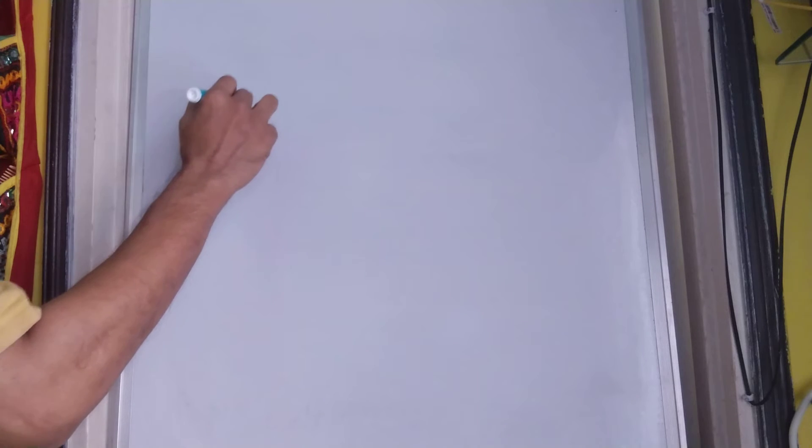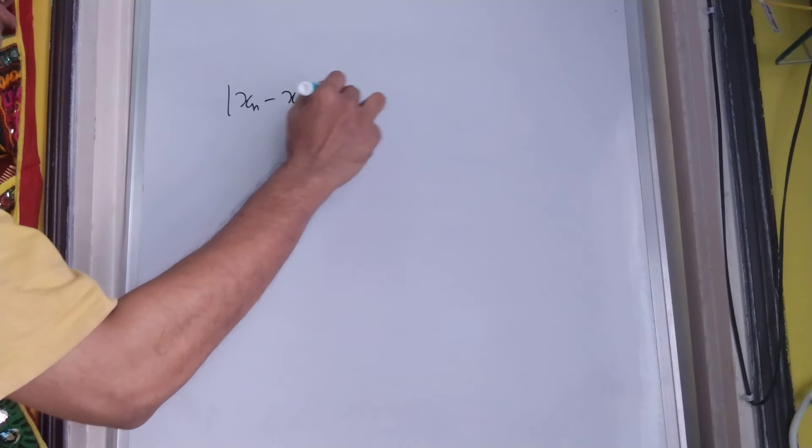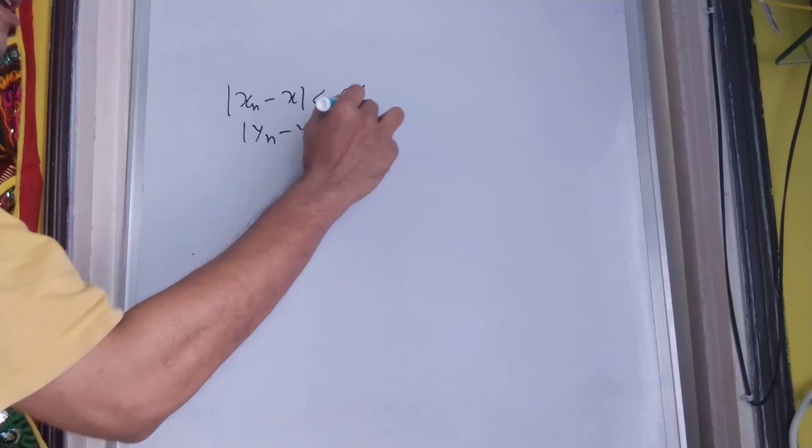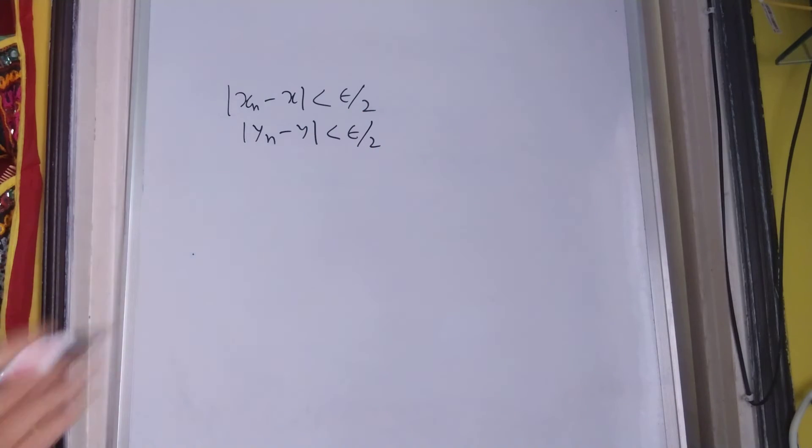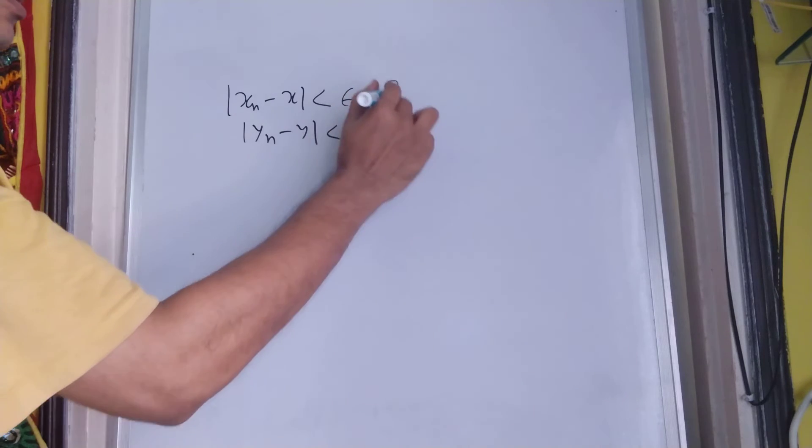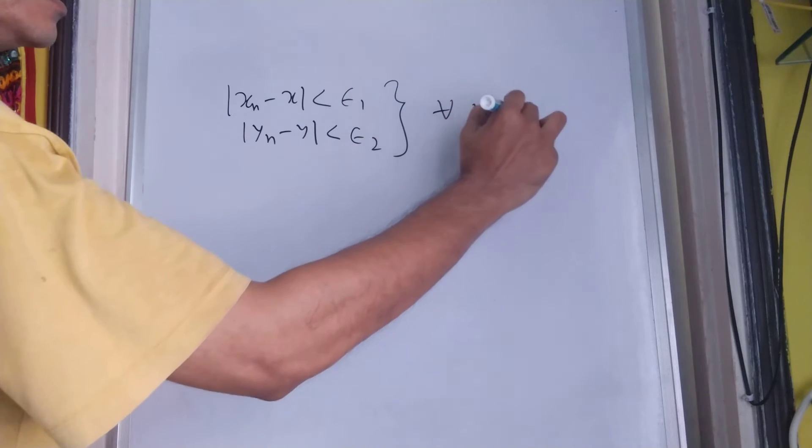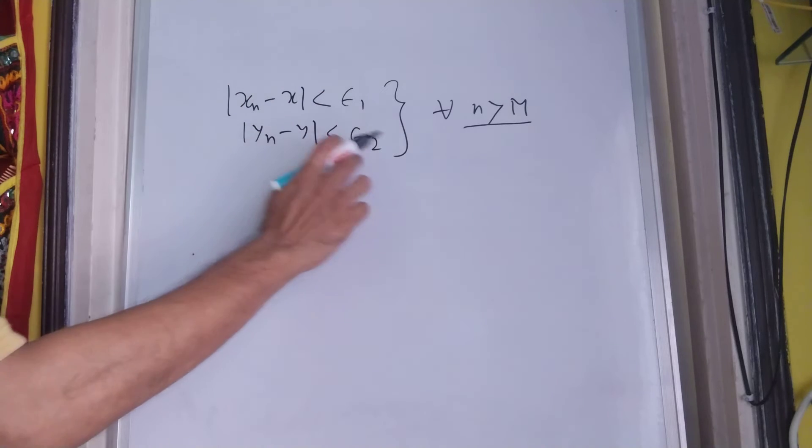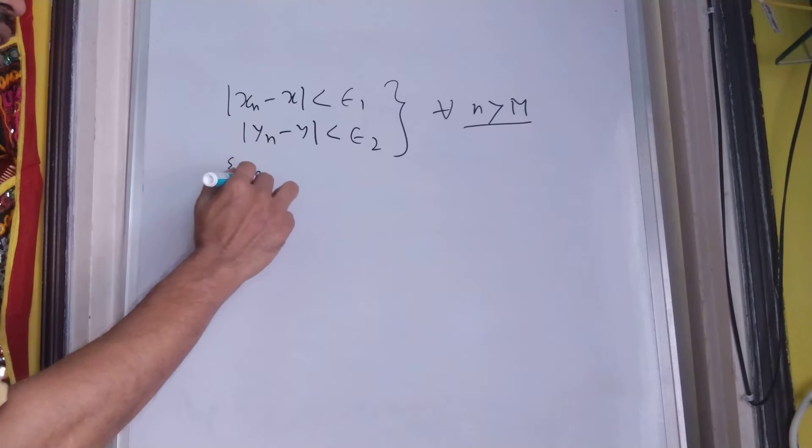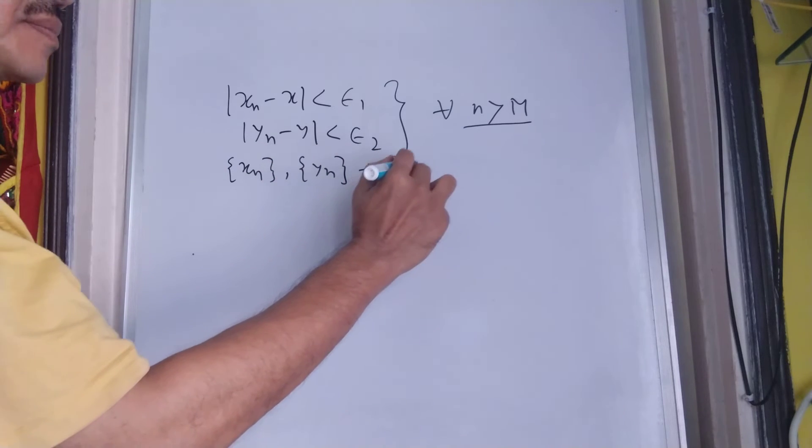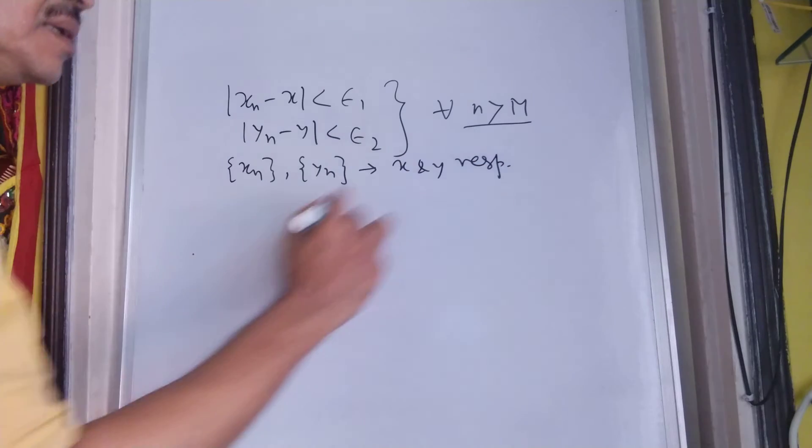We know that xn minus x is less than epsilon and yn minus y less than epsilon. We prefer to take it like this. Remember that for all n greater than capital M, we have this and this. Whenever xn and yn converge to x and y, by definition, respectively.